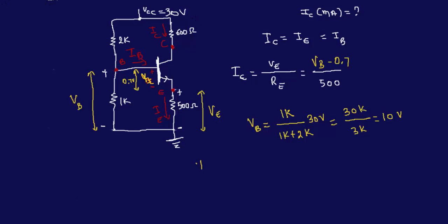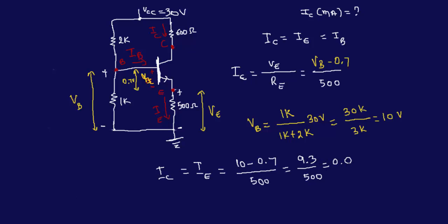Now we can solve. IE = IC = (VB − 0.7) / 500 = (10 − 0.7) / 500 = 9.3 / 500 = 0.0186 amps. Converting to milliamps, IC = 18.6 milliamps. That's our answer.